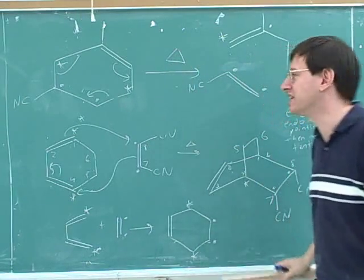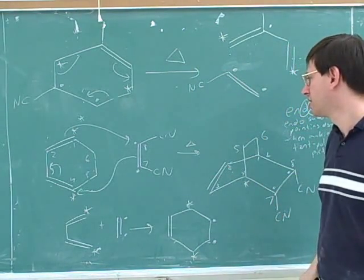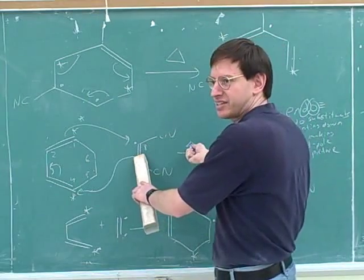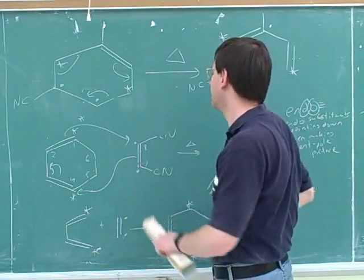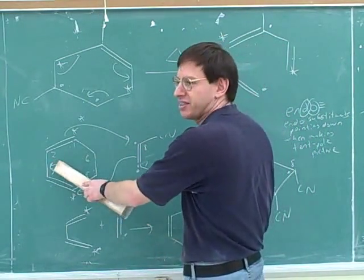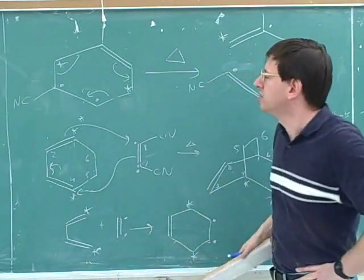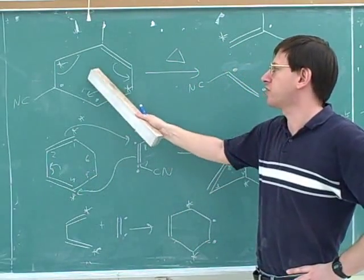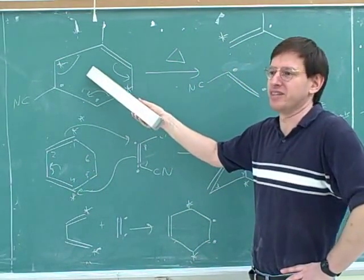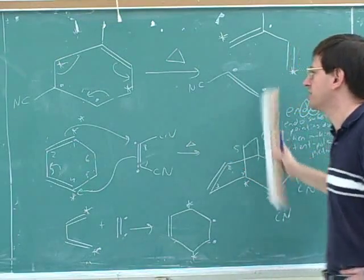In the box for a retro Diels-Alder, you just put heat. For the forward Diels-Alder one, you would put heat and the dienophile. Notice that a retro Diels-Alder only involves one starting material, so there's nothing to put in the box except for the heat.